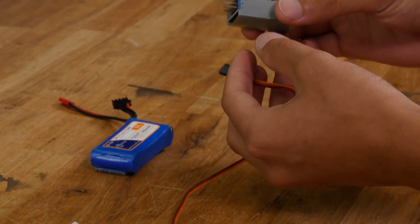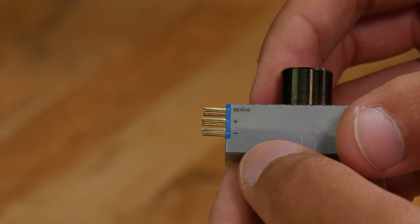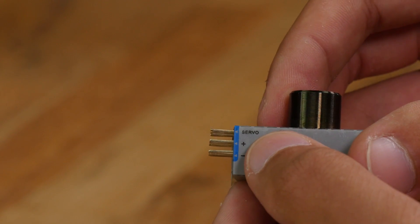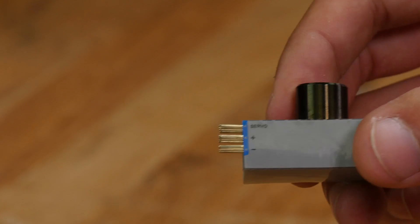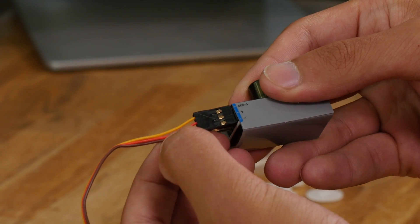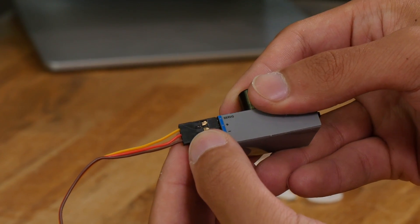Make sure when you do this that you're plugging it in the right way. Your servo tester should have the negative connector labeled, the positive rail labeled, and the signal wire labeled. The way these wires are colored: black or brown is always negative, red is always positive, and yellow or white is always the signal wire.